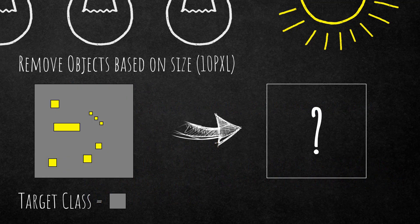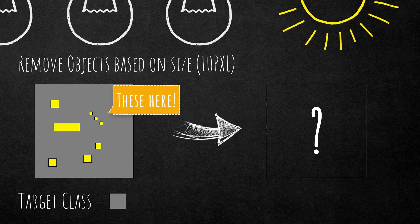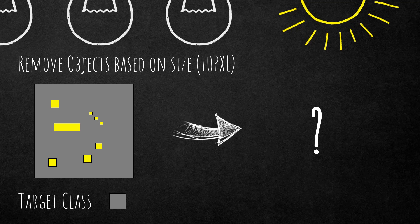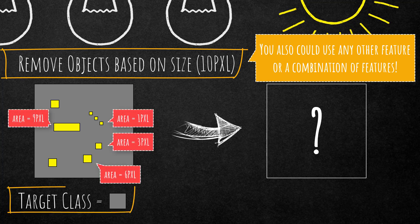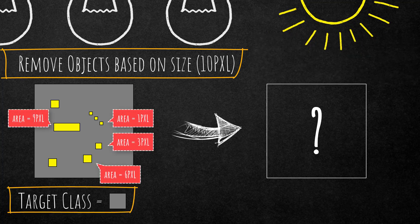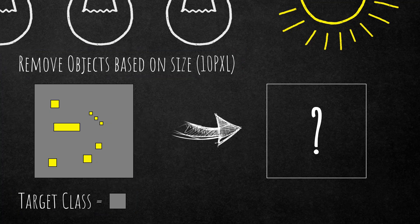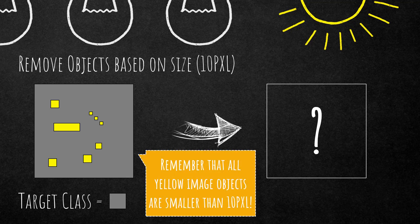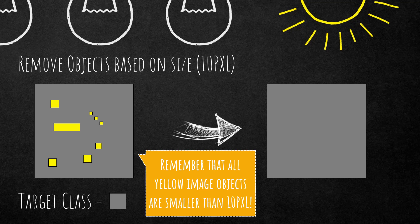I've prepared a few examples. What we want to do is remove these yellow image objects — the ones classified into the yellow class. In the first example, on the left is our classification. We want to remove objects based on size — 10 pixels — and the target class is the gray class. Every image object smaller than 10 pixels will be dissolved into the gray class. After execution, all the small image objects are removed because they were all smaller than 10 pixels.